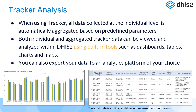Both aggregate and individual data can be viewed and analyzed within DHIS2 using built-in tools including dashboards, tables, charts, and maps — similar to the analysis in the aggregate component of DHIS2. You can also export data collected in the tracker to an analytic platform of your choice, such as a simple Excel export, or even create advanced integrations using the DHIS2 Web API.